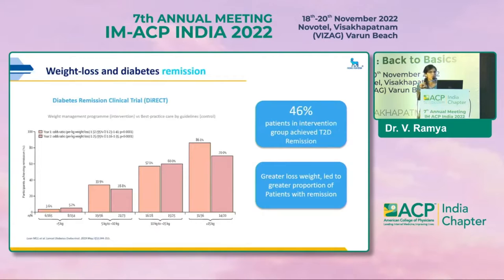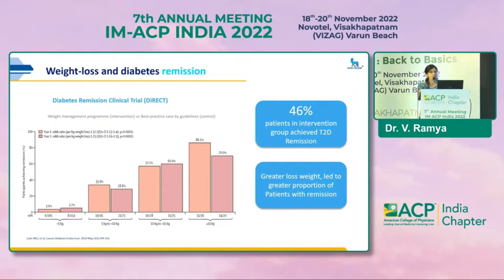Another important diabetes prevention trial is the Diabetes Remission Clinical Trial (DiRECT). It clearly showed that at the end of one year and two years, with a significant decrease in weight from 5 kg to 15 kg, there is an 86% decrease in the incidence of diabetes. 46% of patients in the intervention group achieved remission. Greater the weight loss, greater the remission; with sustained weight loss, we can prevent or delay the onset of diabetes.